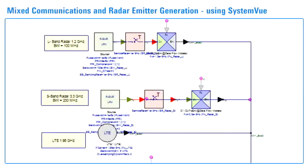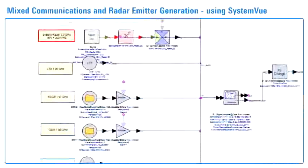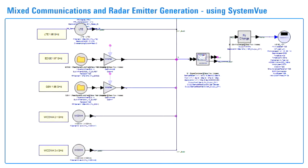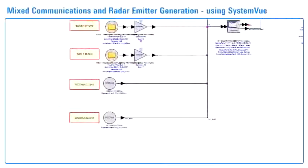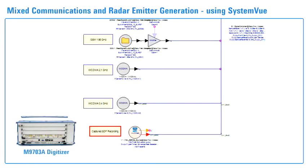The pre-configured radar signal sources from the radar library include an L-band and S-band emitter. The wireless signal sources from the standards-based wireless libraries include LTE and WCDMA emitters and a WCDMA interferer, which is in the same band occupied by the S-band radar. There is also GSM and EDGE emitters. Although not part of this setup, captured live signals could also be combined through SDF recordings captured from digitizers, such as the M9703A and VSA software.